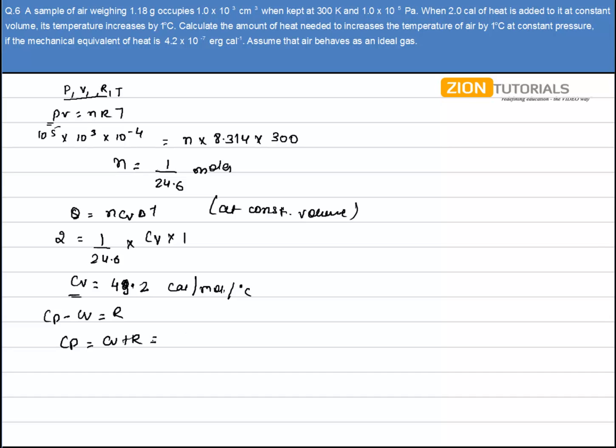That will be equal to Cv plus R, and it will be equal to 51.87 calorie per mole per degree Celsius.